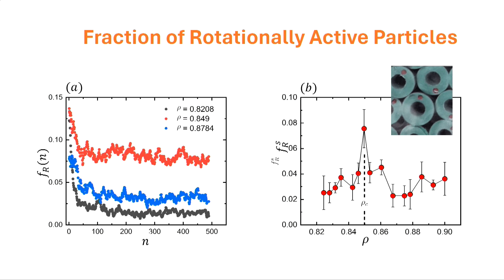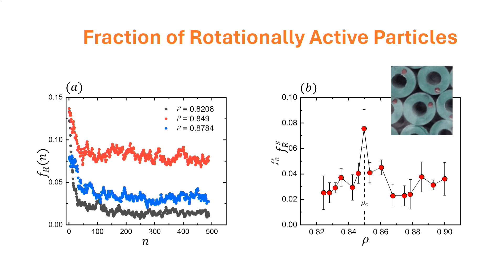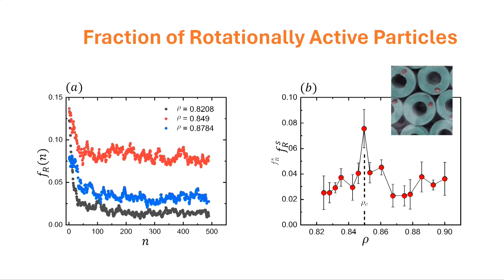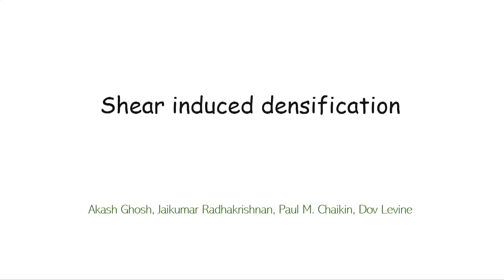You can measure the fraction of active particles - how many have rotated versus not rotated - and something appears to be happening near the critical density. With 20 minutes remaining, we now move to the second part of the talk.